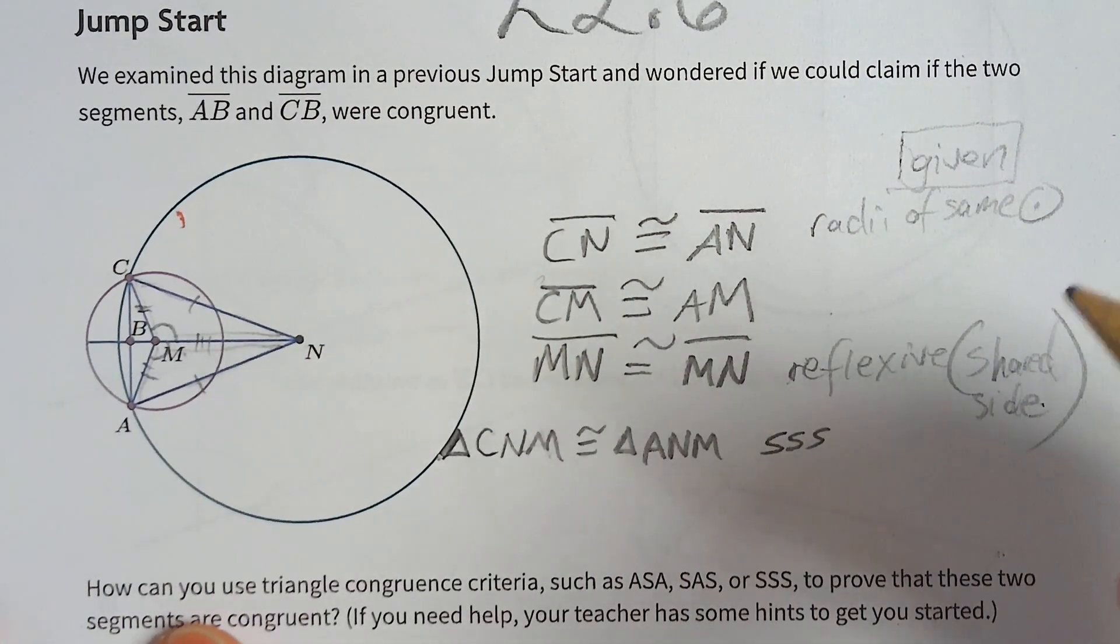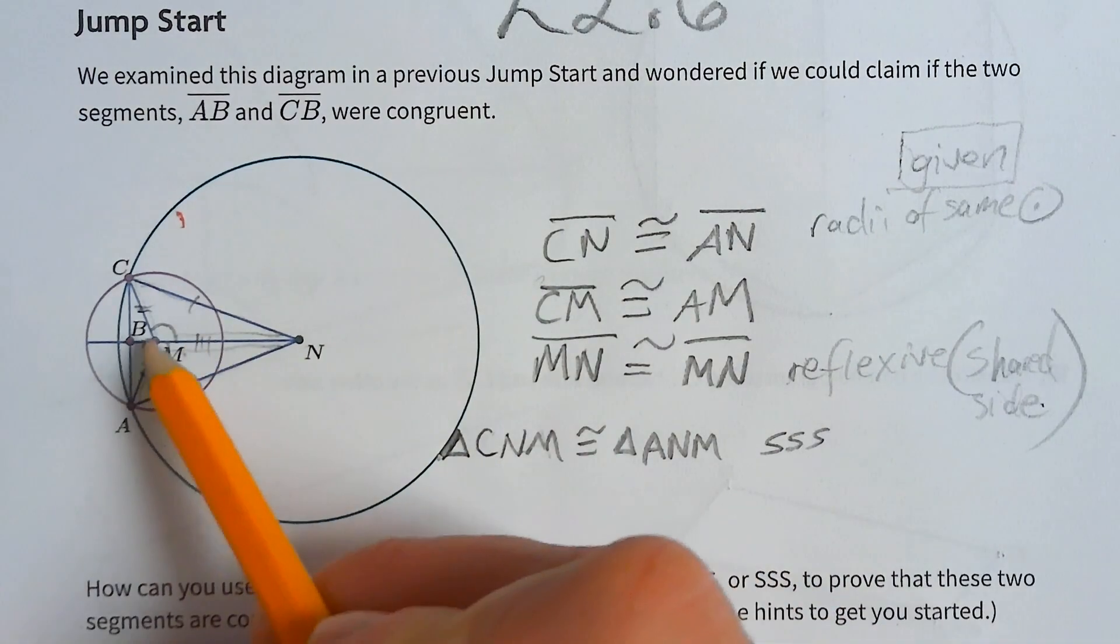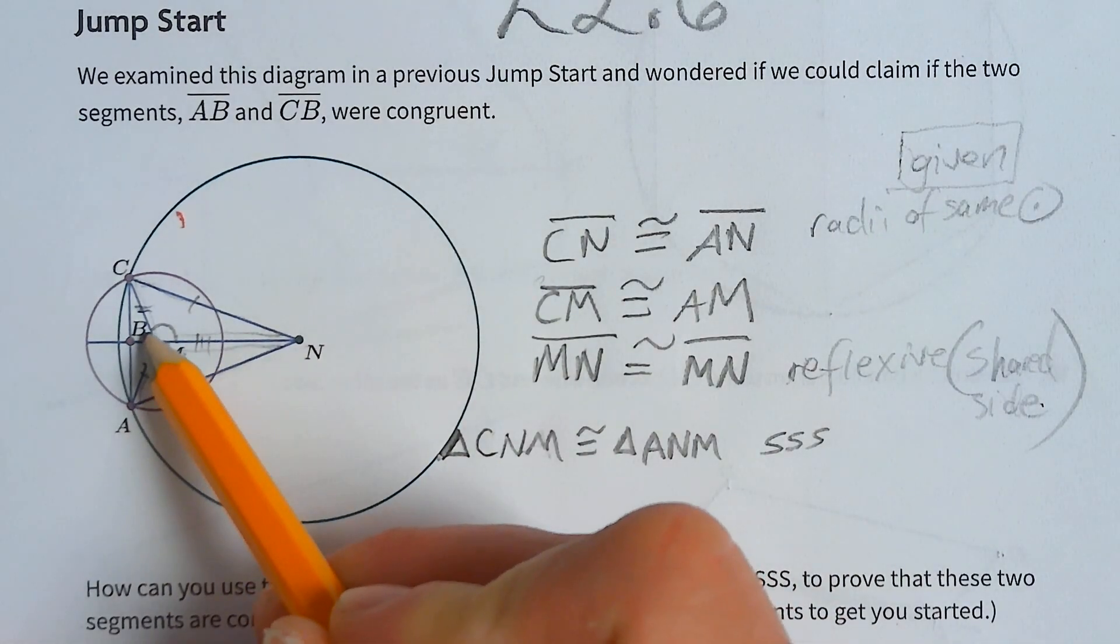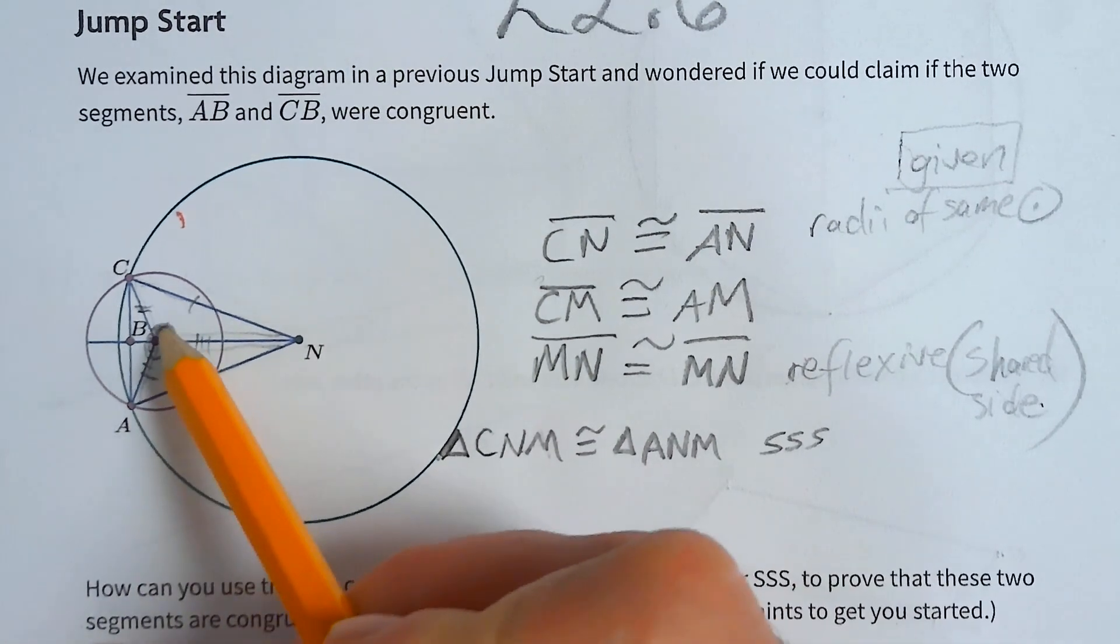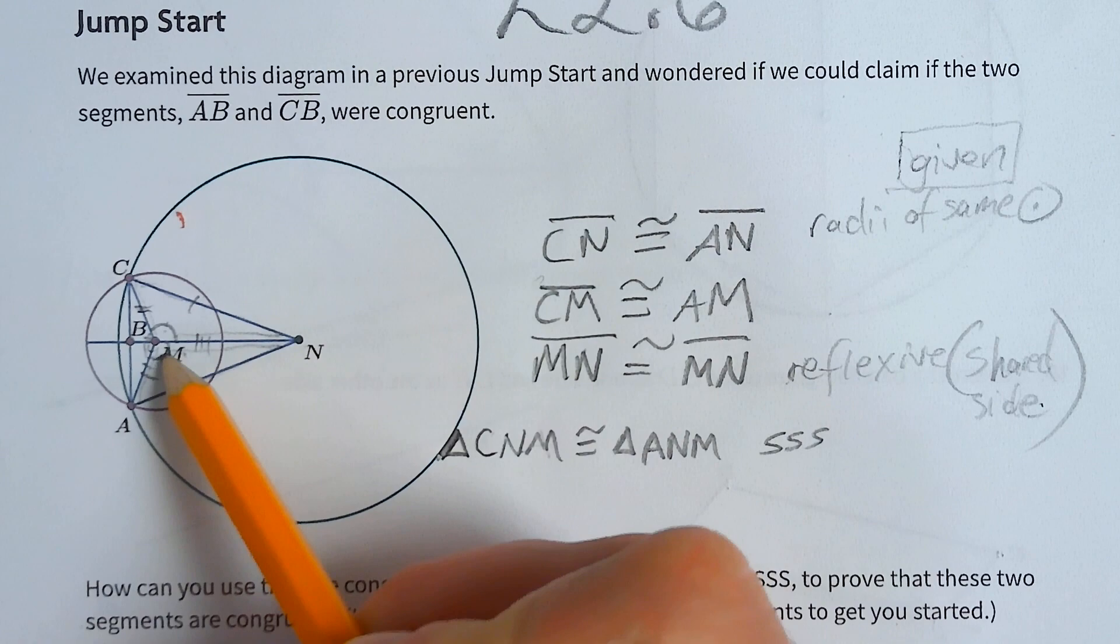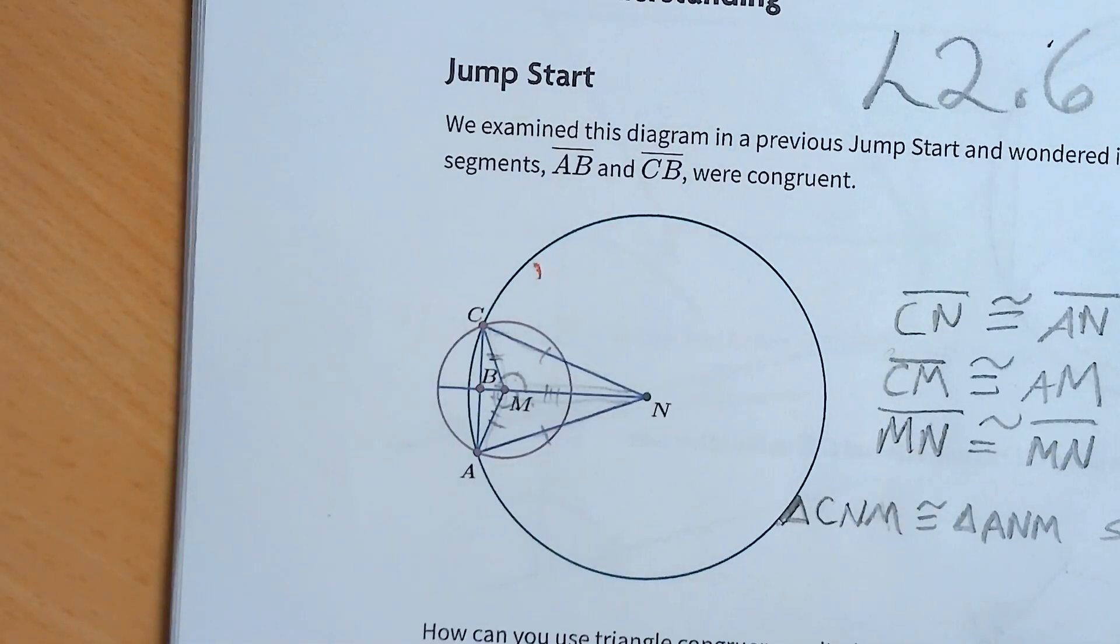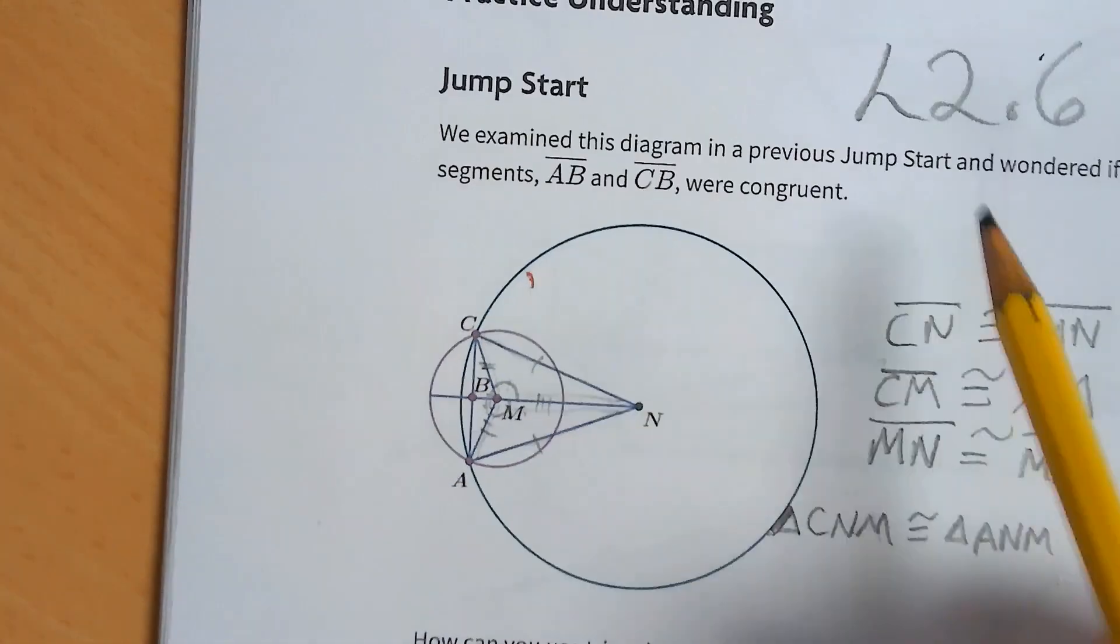And now we know these are congruent, we know these two angles are congruent to each other, which means we actually know that these angles on the other side are congruent to each other because straight lines have to add up to 180. So 180 minus that equals that, and 180 minus that same thing equals that same thing.